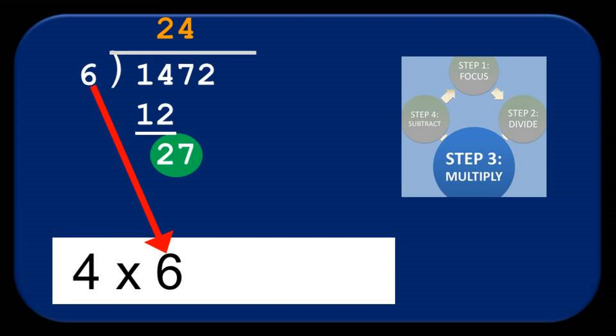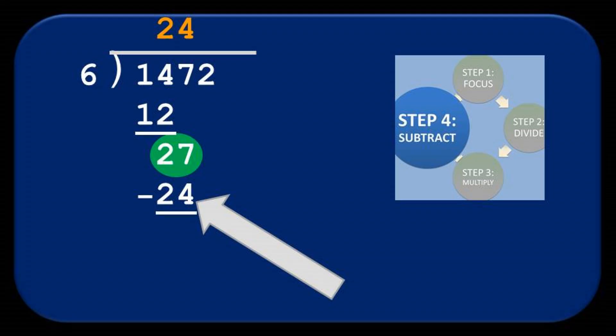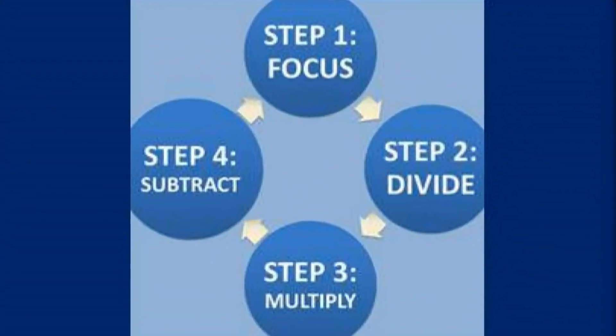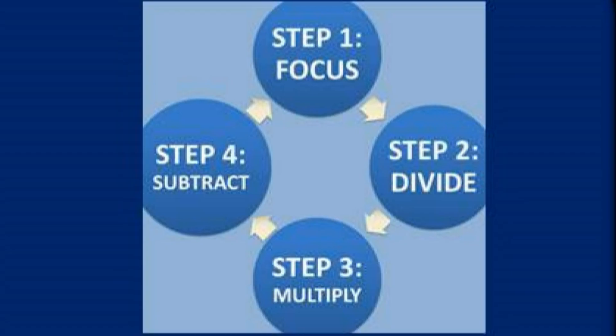4 times 6 equals 24, which we write down underneath the focus. Then, we subtract. 27 minus 24 equals 3. We've just completed another cycle of the basic steps of long division. Let's do it one more time.